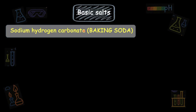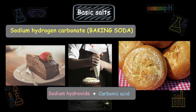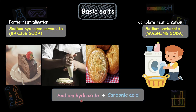Another basic salt is baking soda, or sodium hydrogen carbonate, used in bakeries and confectionaries to make fluffy cakes and cookies. Here is an interesting fact: both baking soda and washing soda are prepared from the same set of acid-base pair — both from the neutralization reaction of sodium hydroxide and carbonic acid. You might wonder how the same reactants give different products. That depends on the extent of completion of the reaction. Partial neutralization gives us baking soda, and complete neutralization gives us washing soda. We will learn more about partial and complete neutralization in higher classes.